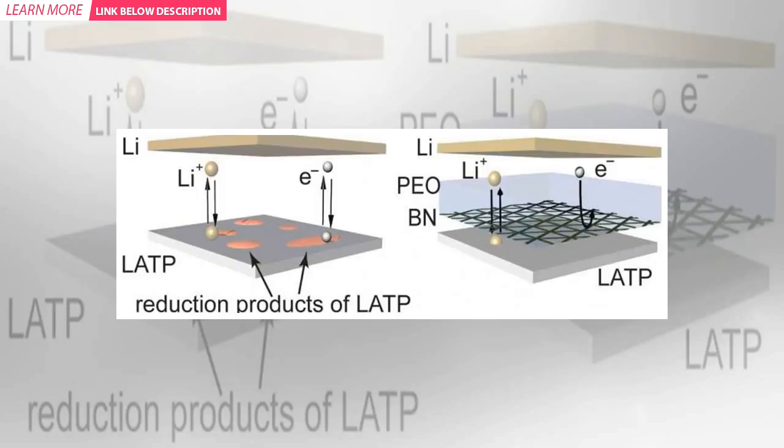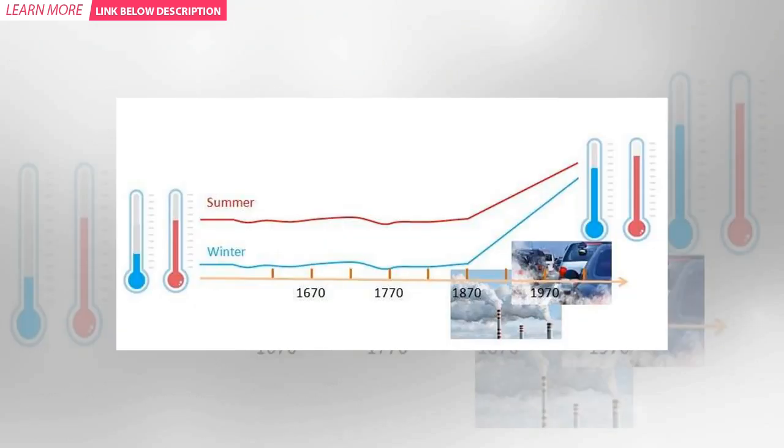A recent article published in the journal Nature Sustainability by Dwan et al. has shown that human influence on climate change can be traced back to the late 19th century based on summer-winter temperature difference.